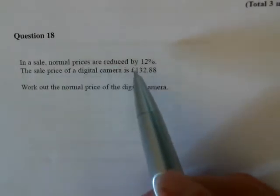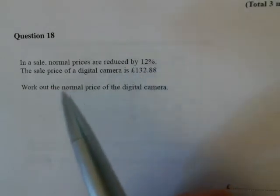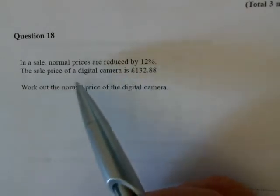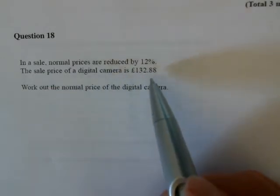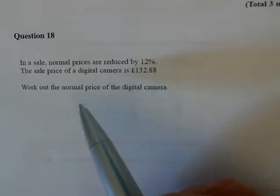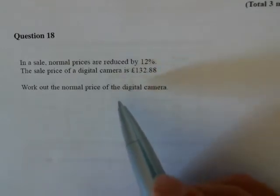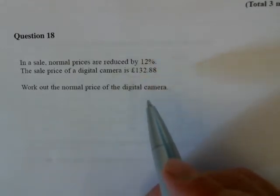In a sale, normal prices are reduced by 12%. The sale price of a digital camera is £132.88. Work out the normal price of the digital camera.